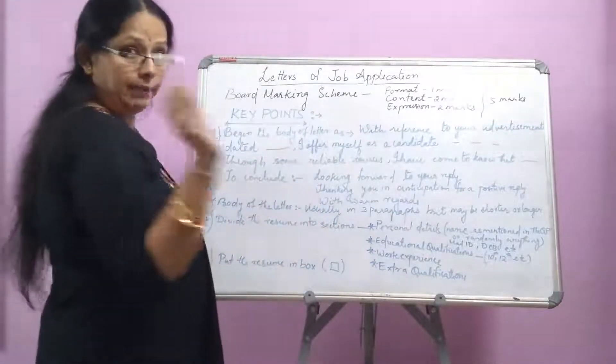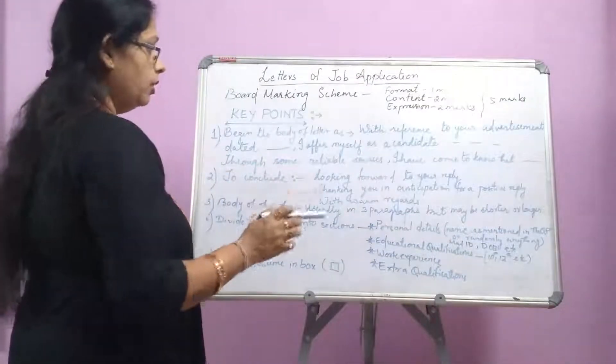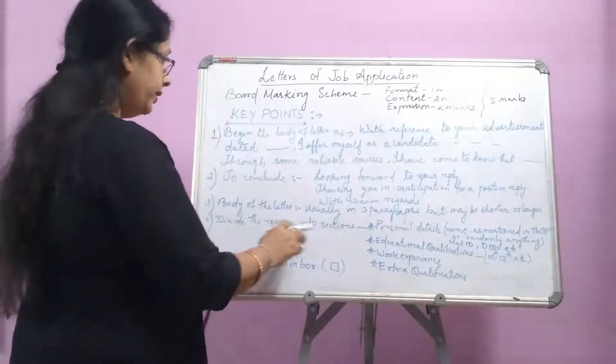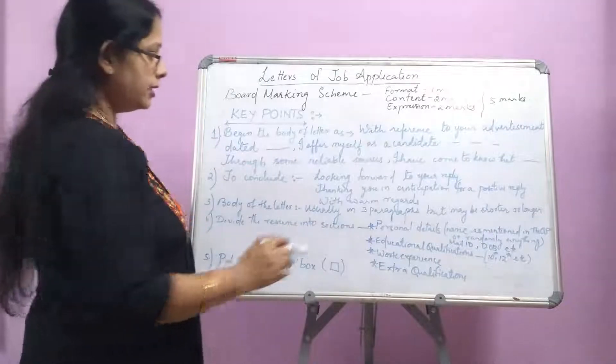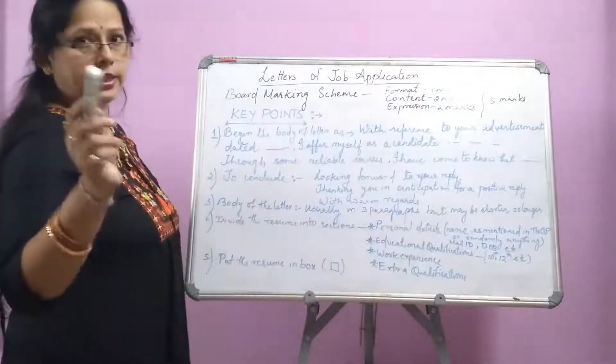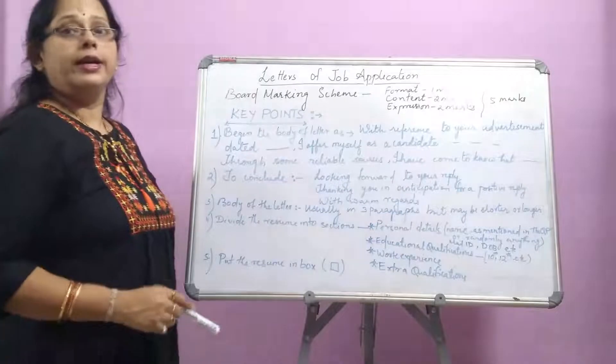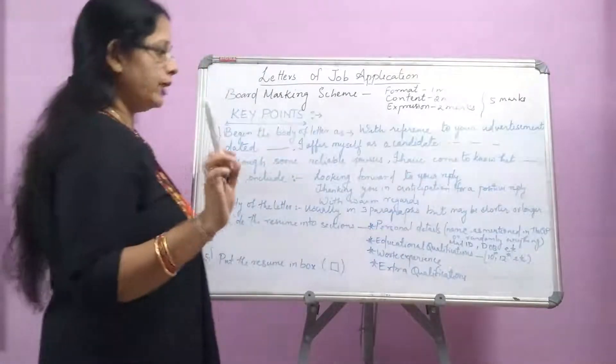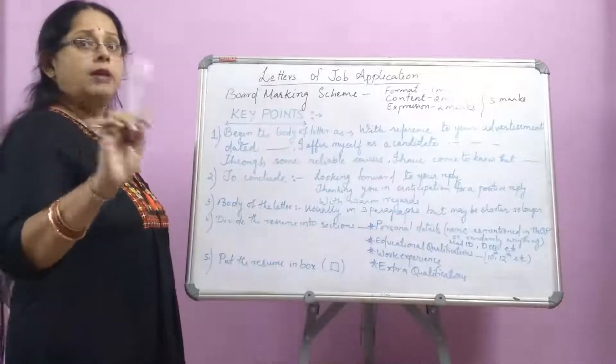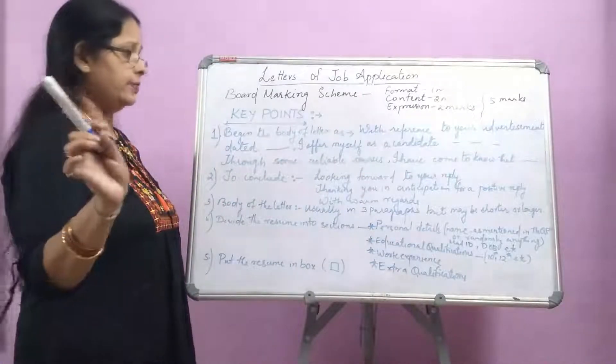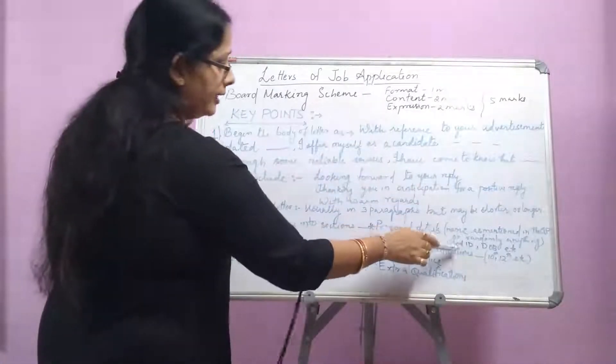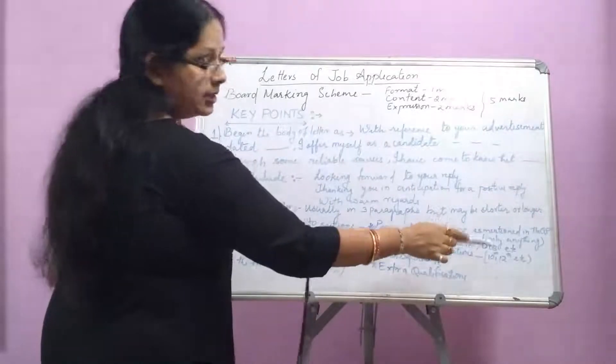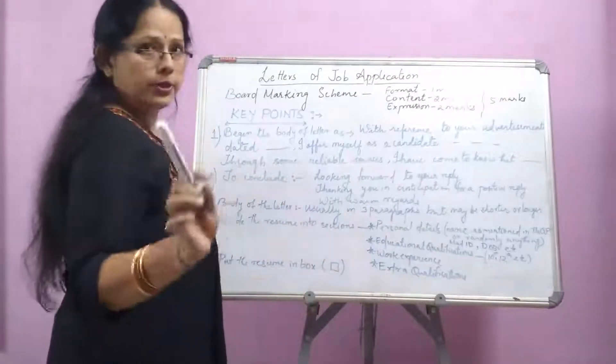Coming to the resume section, what are you going to do? Divide the resume into sections. First is your personal details. Personal details me, your name. Name, what will you write? As mentioned in the question. In the question paper, question me jo naam diya gaya, you should not give your original details in this. Then email ID, date of birth and etc. This is your personal details.